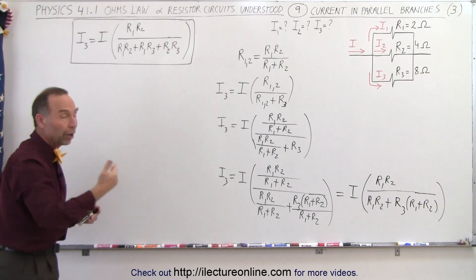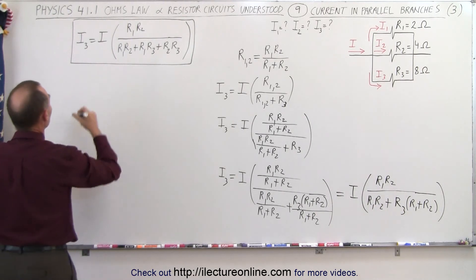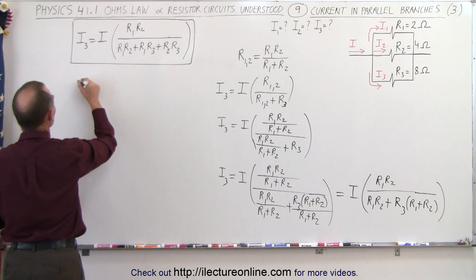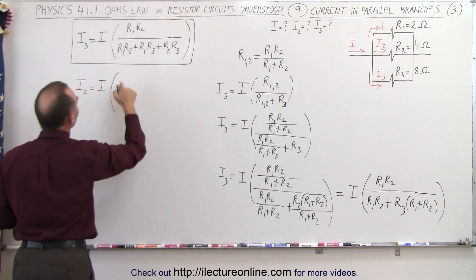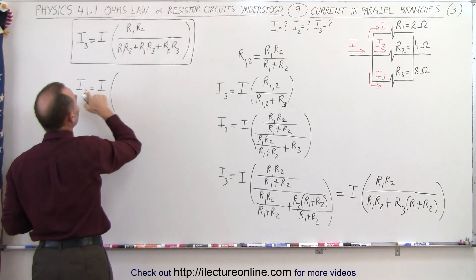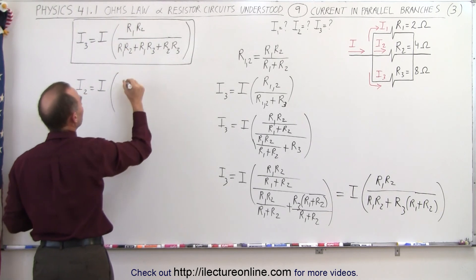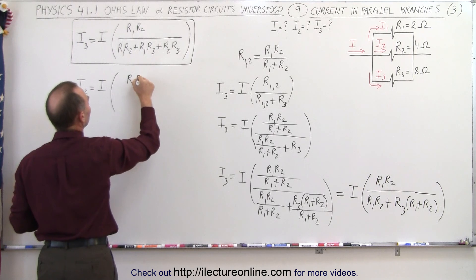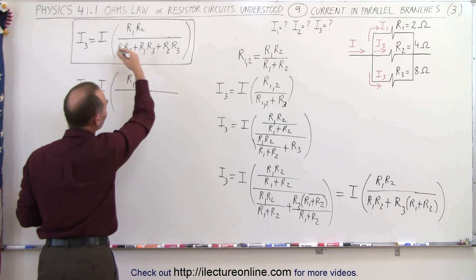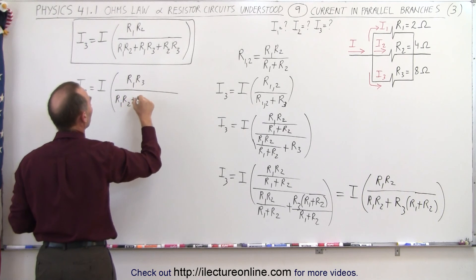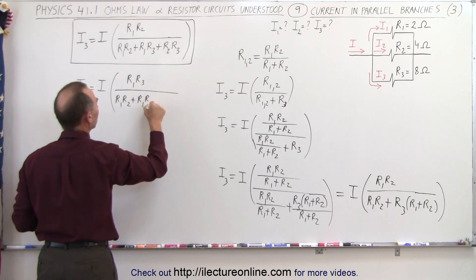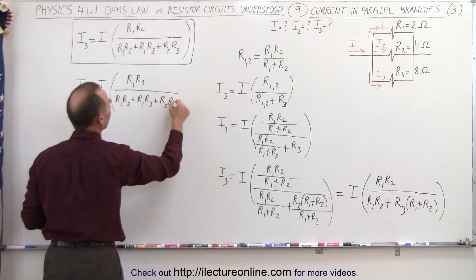we have I2 is equal to I times, in the numerator, R1 times R3 because we have an I2 here, divided by the same combination in the denominator: R1 R2 plus R1 times R3 plus R2 times R3. That will be the current in the second branch.